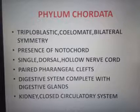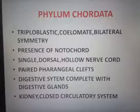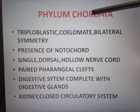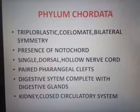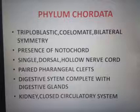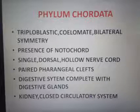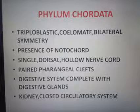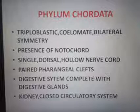Hemichordata means it has both features of the chordata and the non-chordata. Next we are discussing the next phylum, that is Chordata. The organisms have a notochord — a stiff flexible rod-like structure along the back of the animal. This phylum comprises about 55,000 species. The main important character of this group is the presence of the notochord.